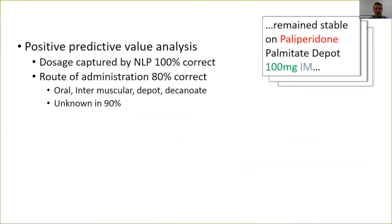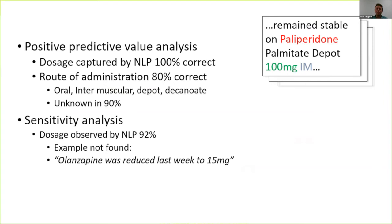We did an analysis of how well the NLP application performed by manually annotating 50 notes. The NLP app captured dosage correctly 100% of the time, and route of administration was also mostly captured correctly. In terms of sensitivity, we captured dosage around 92% of the time. An example where it wasn't captured was a sentence like 'olanzapine was reduced last week to 15 milligrams' — the dosage is too far from the drug name. We are currently improving the NLP so we hope to get precision and sensitivity up somewhat.